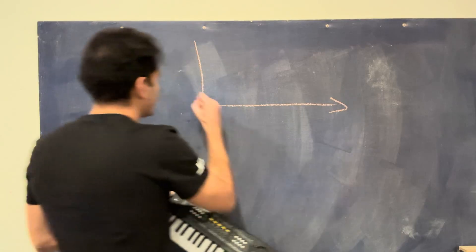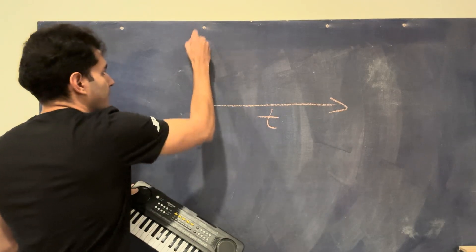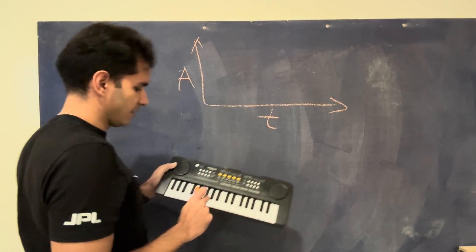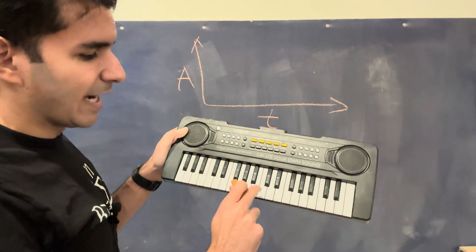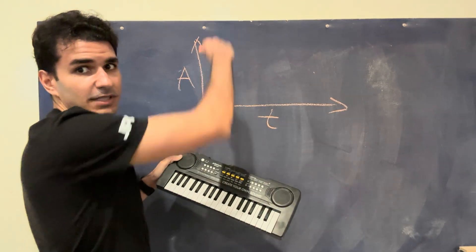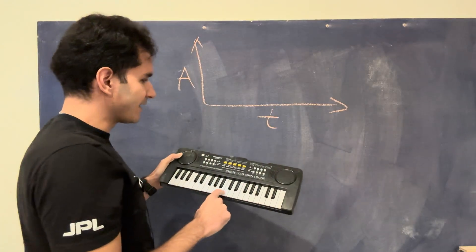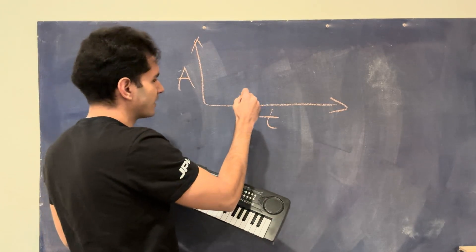So basically, whenever I press this button, all I'm doing is I'm generating a signal in time. This is the amplitude. And let's say, depending on how hard I press it, that determines how loud it is, that determines how high the amplitude is.